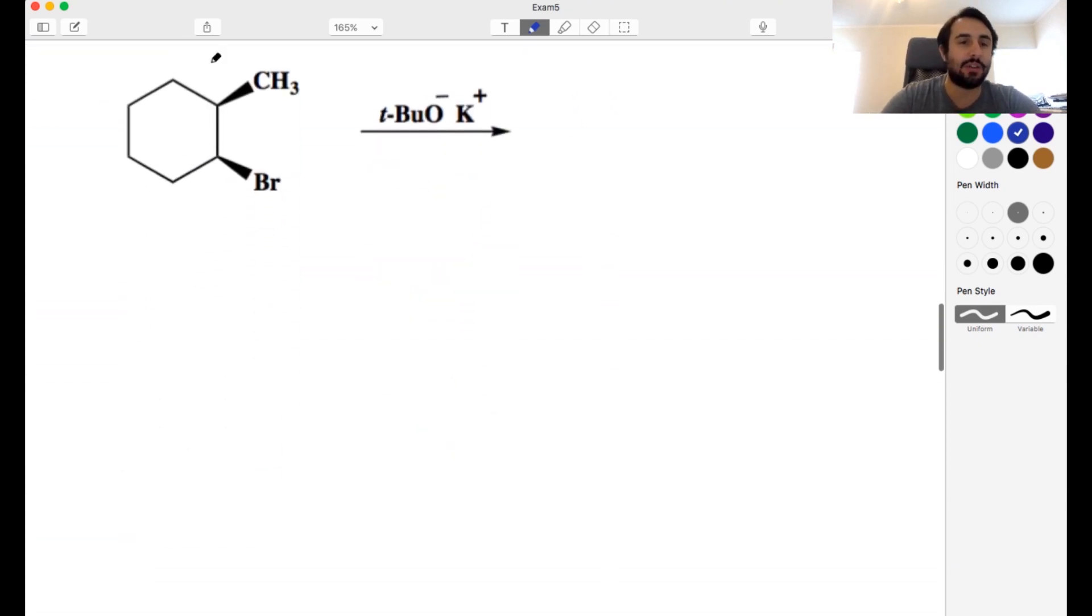Okay, now we have this cyclohexane derivative and tert-butoxide. So whenever we see tert-butoxide, that is our classic E2 promoter. We know we're going to do E2 and we have a substrate that is a cyclic system. So whenever we do E2 on a cyclic system, remember it's going to be very important to go ahead and draw out the chair conformations that we know exactly what's going on.